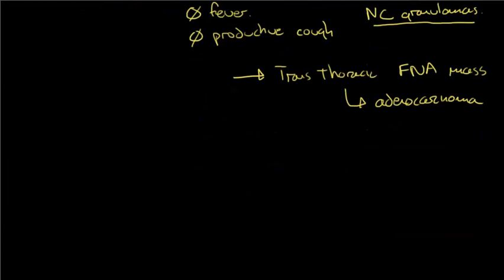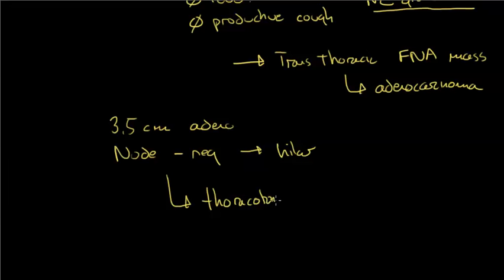Now we're looking at a patient with a 3.5 centimeter adenocarcinoma. Nodes appear to be negative. Remember, the only nodes that were really enlarged were hilar. I had two options: go straight to thoracotomy or VATS, or do an additional mediastinoscopy.